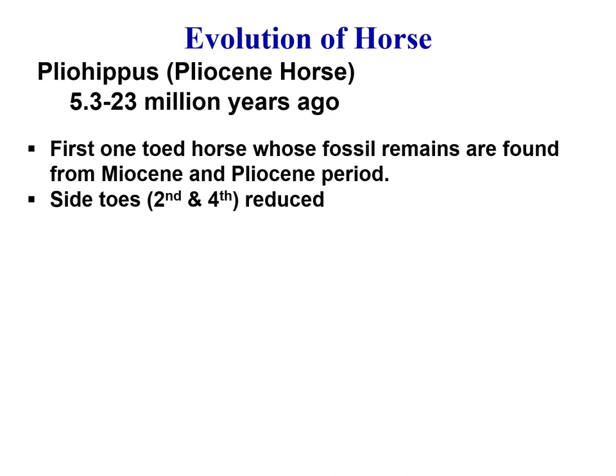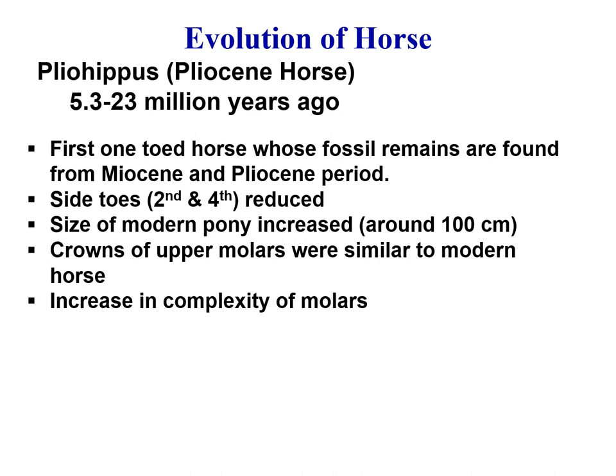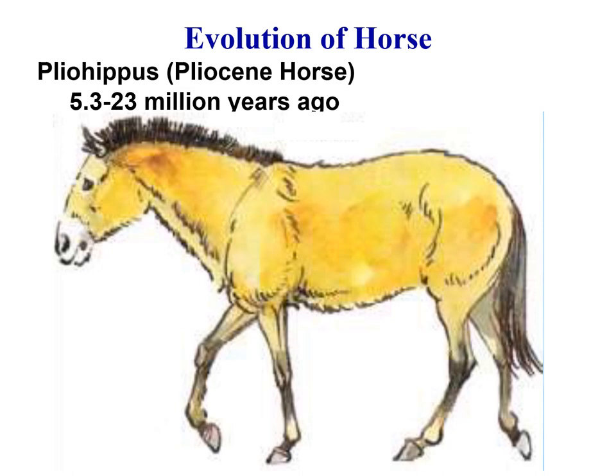Then comes Pliohippus, from 5 to 23 million years ago. This was the first one-toed horse whose fossil remains are found from the Miocene and Pliocene periods. The side toes, second and fourth, were greatly reduced. Size increased to about 100 centimeters — the size of a modern pony. The crowns of the upper molars were similar to the modern horse, with increased complexity of the molars for grazing on tough grasses. There was also an increase in pre-orbital length of the skull.